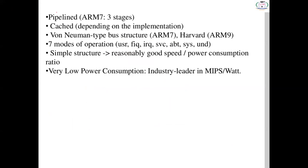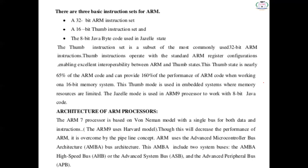ARM7 uses pipeline architecture and von Neumann architecture. There are seven modes of operation and very low power consumption — measured in MIPS per watt (million instructions per second per watt). The three instruction sets are: 32-bit ARM instruction set, 16-bit Thumb instruction set, and 8-bit Java byte code used in JASL state.